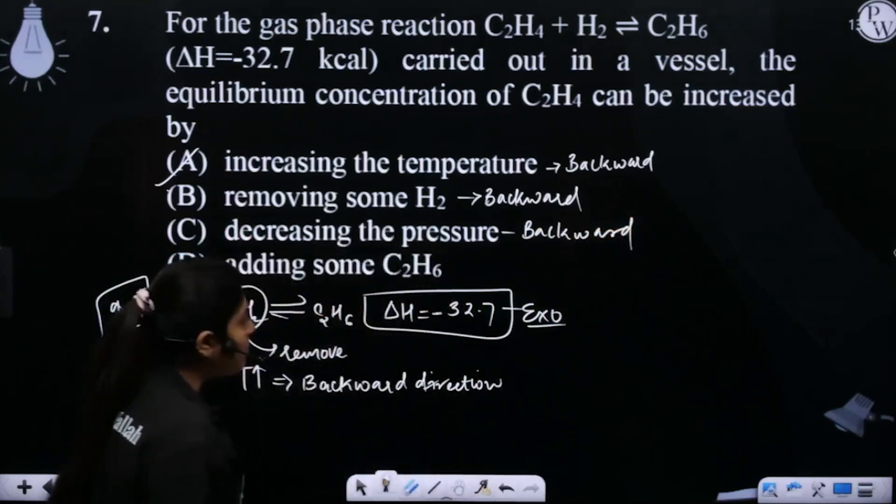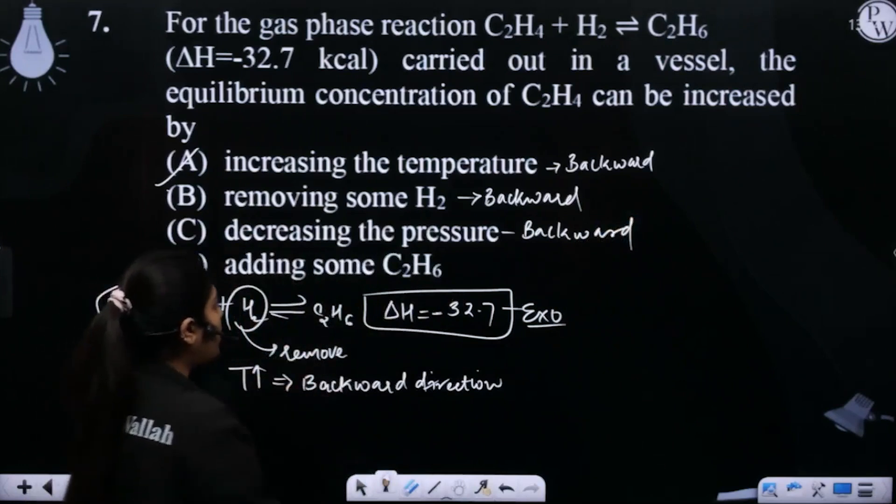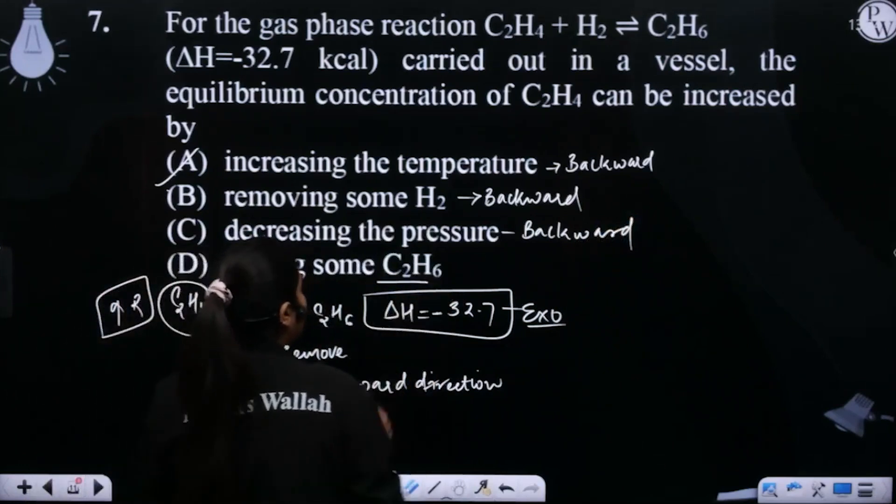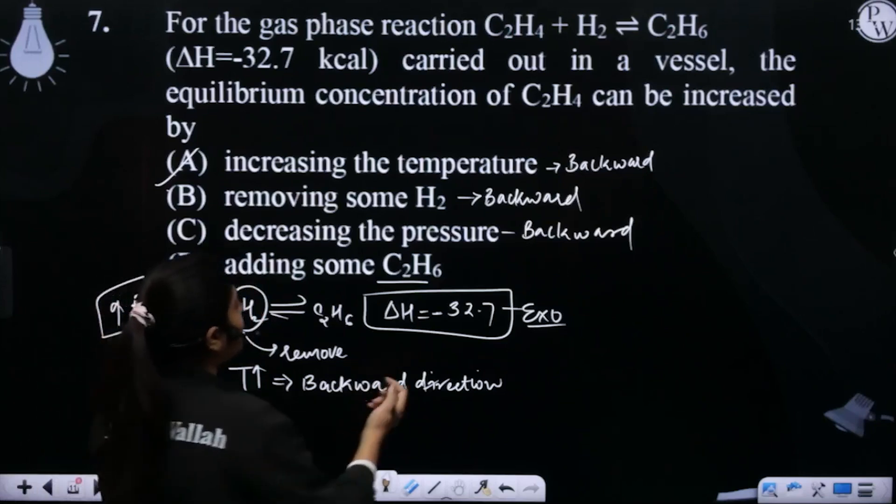The fourth option - adding some C2H6. C2H6 is the product. If product is added, then the reaction will go backward. This is also backward.